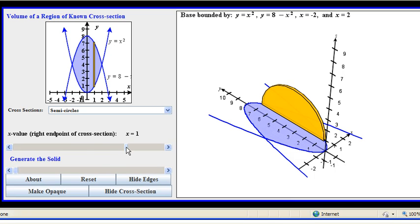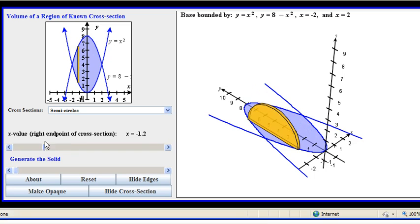And you'll notice we can drag where we're slicing and we get different semicircles depending upon where we slice, because the base of the semicircle is based on the height here, the difference between the two functions.